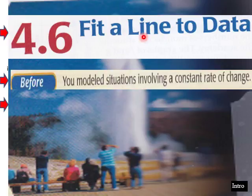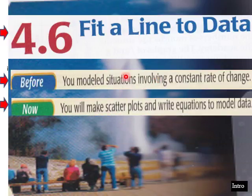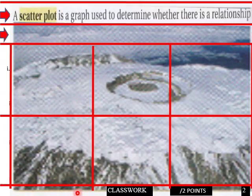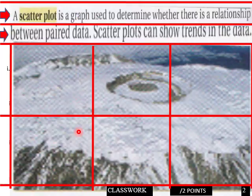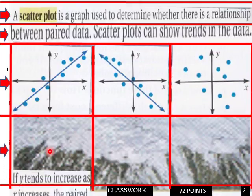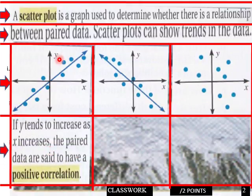Fit a Line to Data. You model situations involving constant rate of change. You'll make scatter plots and write equations to model data. So you can model scientific data. Here we're going to start off with a table. A scatter plot is a graph used to determine whether there's a relationship between paired data. Scatter plots can show trends in the data.